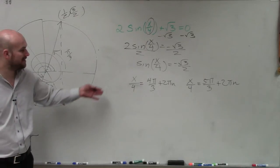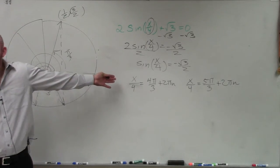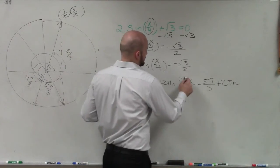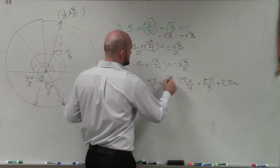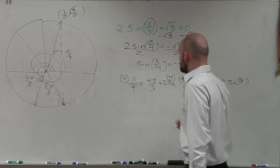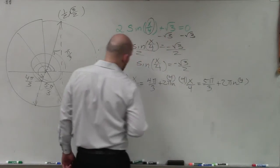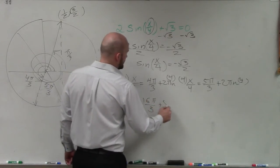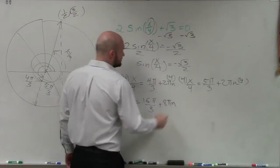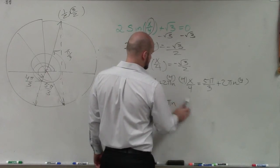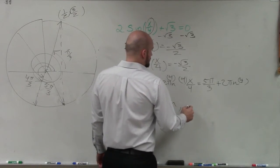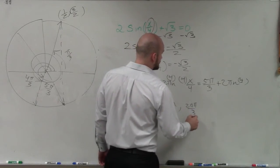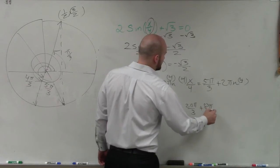Now we can finally go ahead and apply this 4. So all I'm going to simply do with this is multiply the 4 on both sides. So therefore, I have x equals 16 pi over 3 plus 8 pi n, and here I have 20 pi over 3 plus 8 pi n.